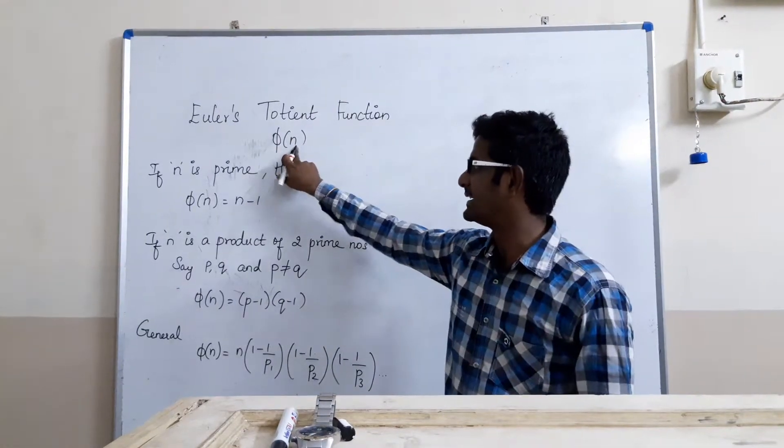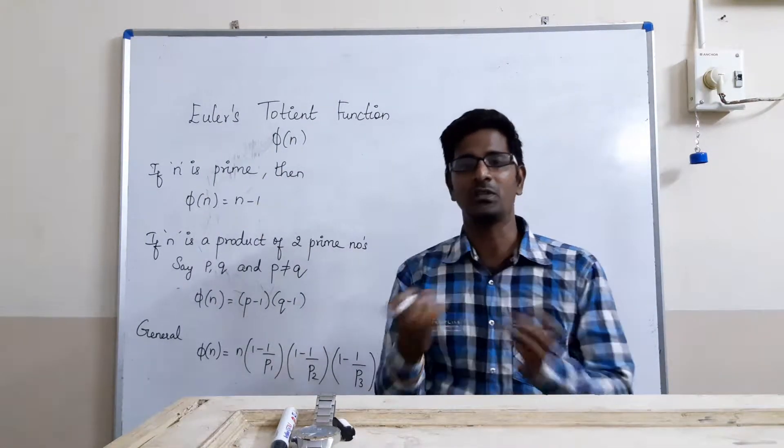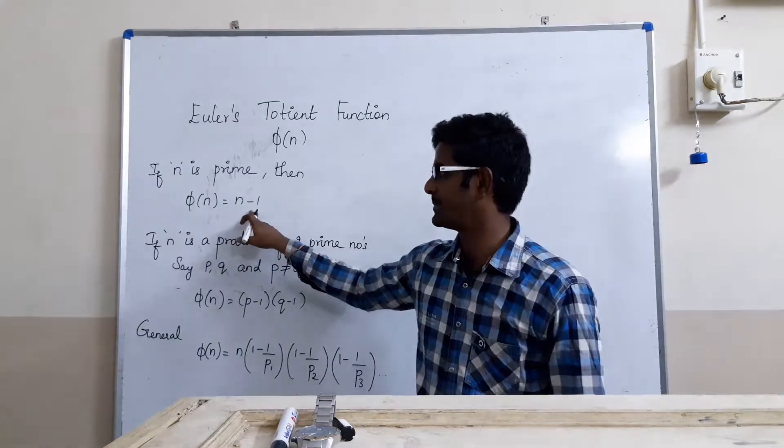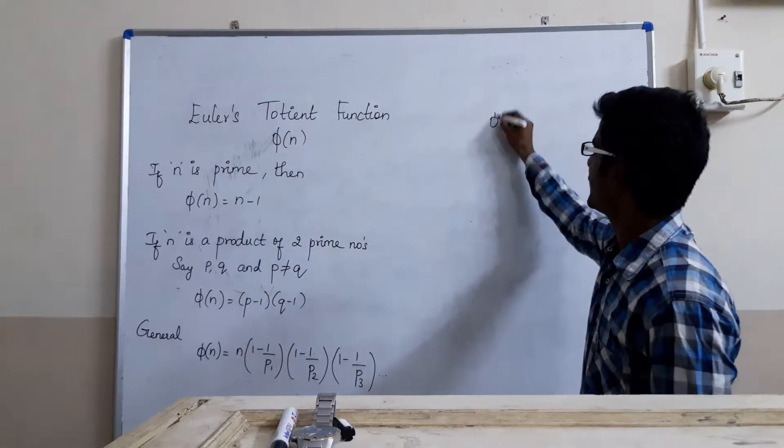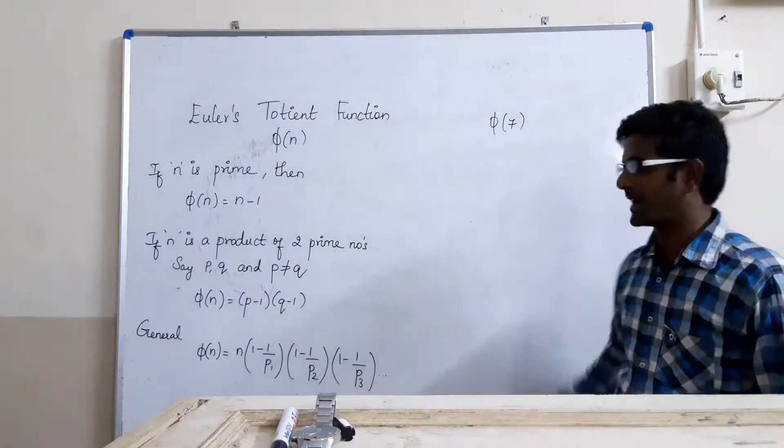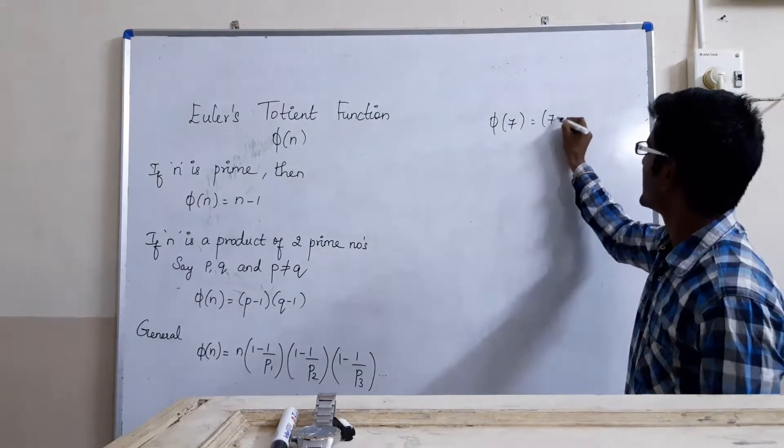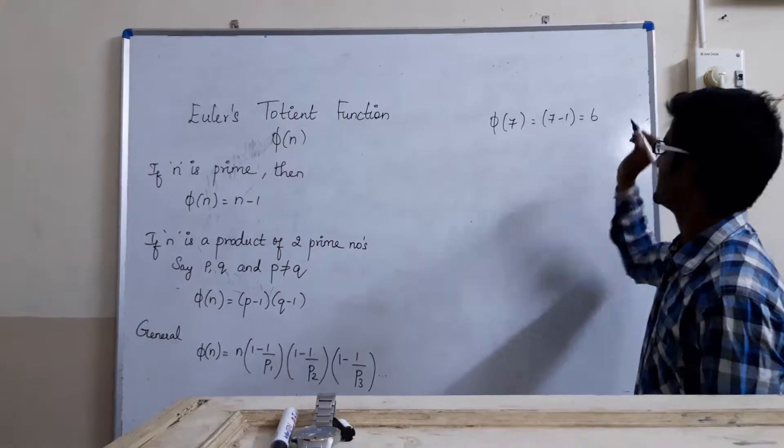If the number n is a prime number, then the answer is so simple, it is n minus 1. For example, phi of 7. Since 7 is a prime number, the answer is 7 minus 1 which is equal to 6.